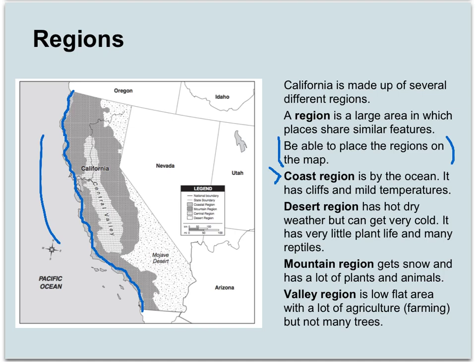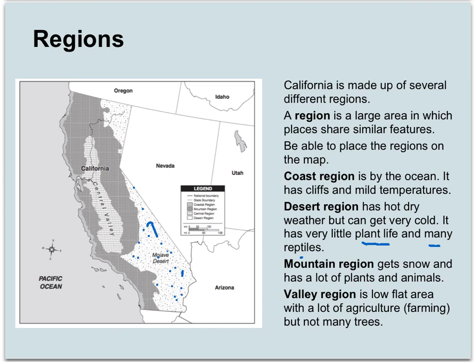The desert region is a hot, dry area. It's normally hot, though it can get pretty cold there too. It has very little plant life and a lot of reptiles, just to give you an idea of what a desert region would look like. You can see this whole area in here — the Mojave Desert — is a desert region. There's also some more desert up here in the northeastern part of the state.